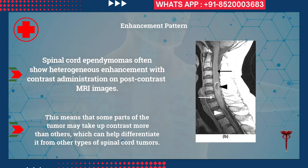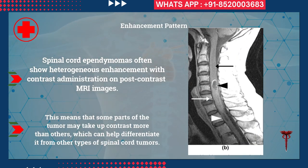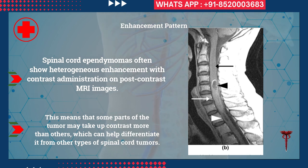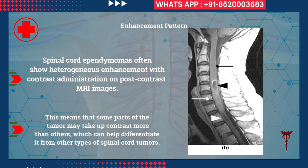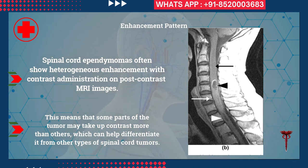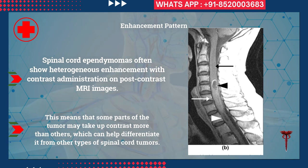Spinal cord ependymomas often show heterogeneous enhancement with contrast administration on post-contrast MRI images. This means that some parts of the tumor may take up contrast more than others, which can help differentiate it from other types of spinal cord tumors.